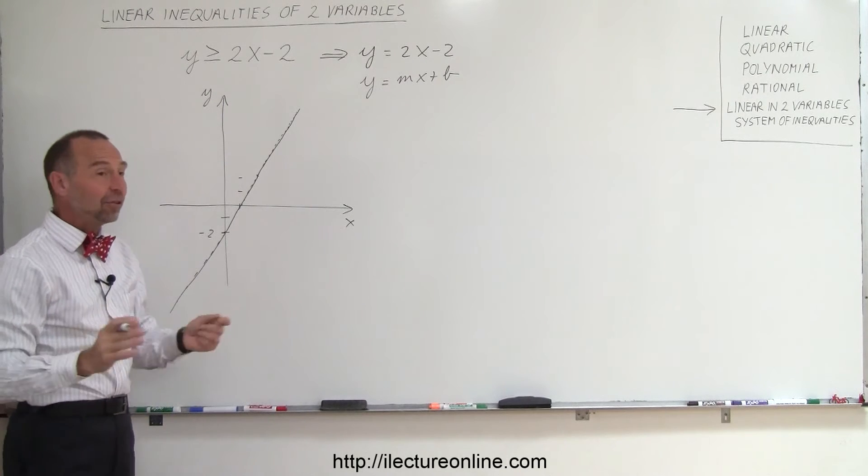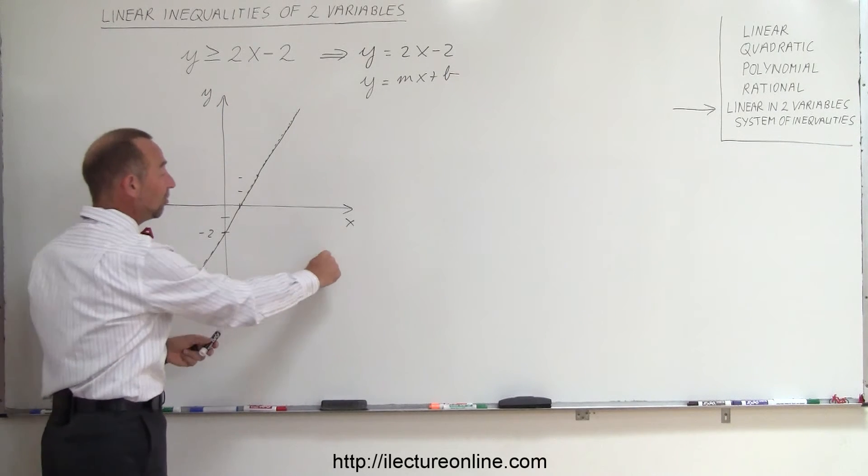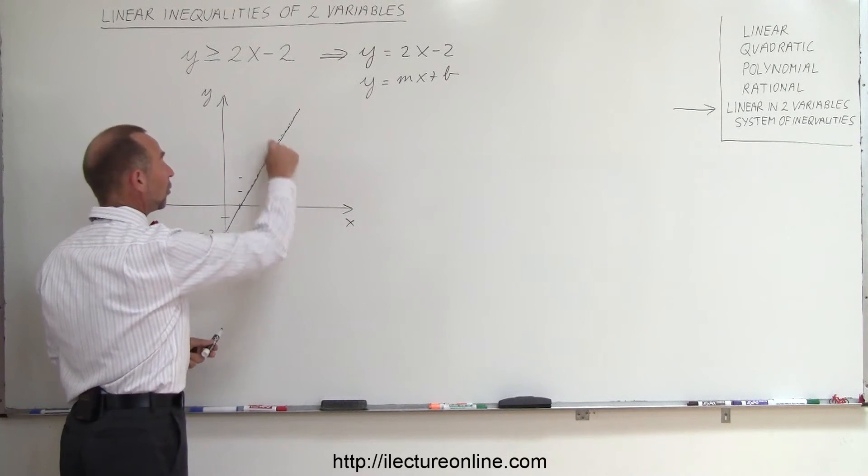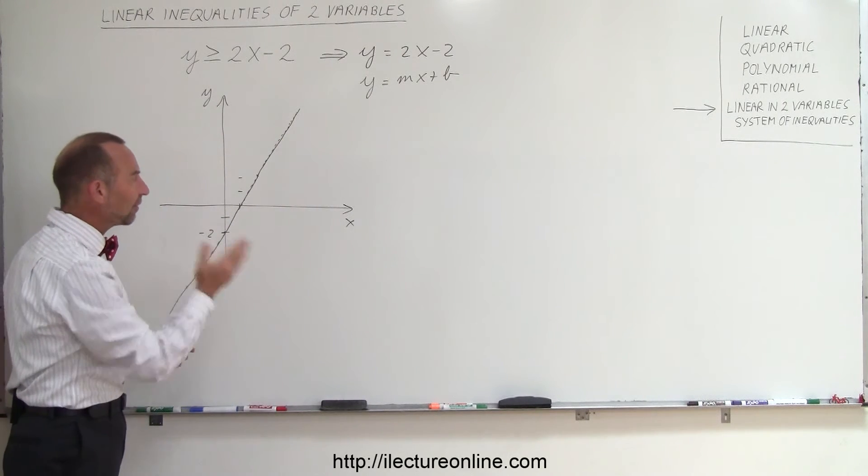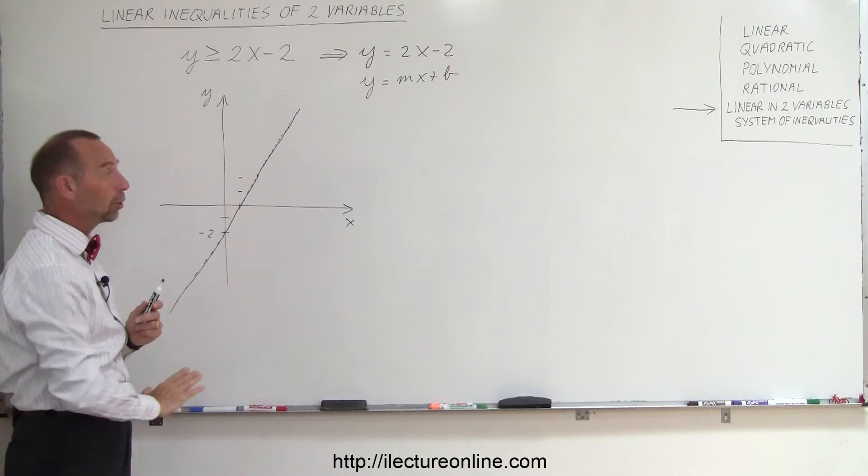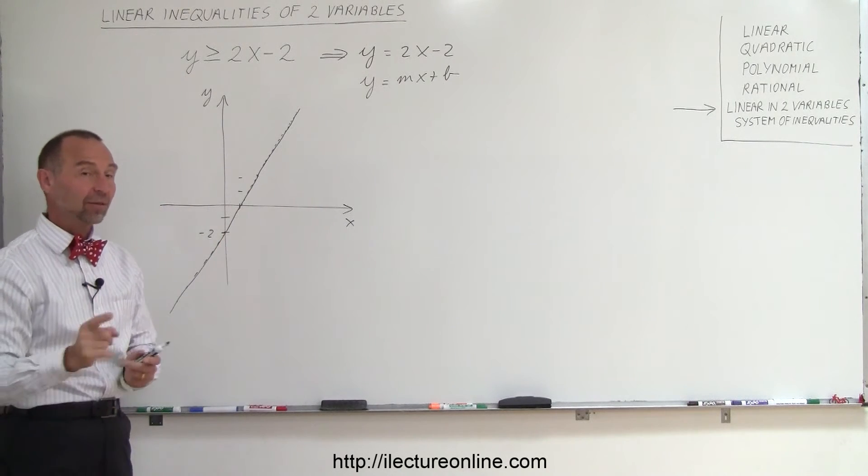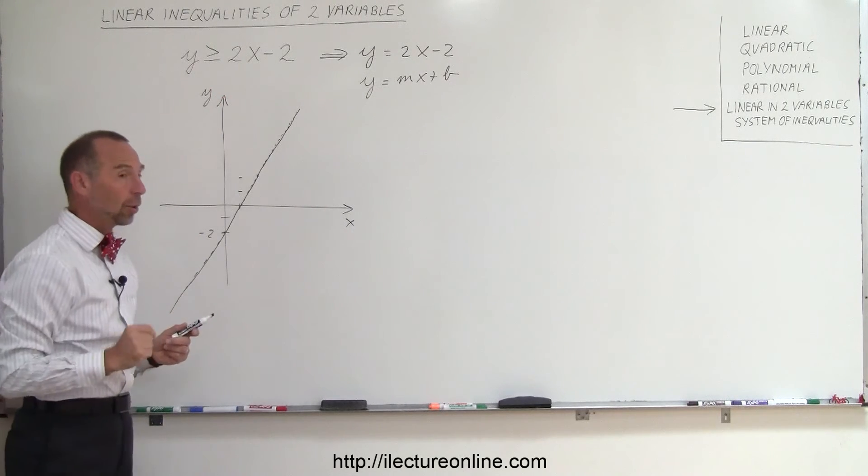Now, when we say it has an infinite number of solutions, that means maybe this is the solution, that solution, this solution, or maybe this and this and this is the solution. In other words, one of the sides of that line will be the solution, will include the infinite number of combinations of x and y that satisfies that inequality.